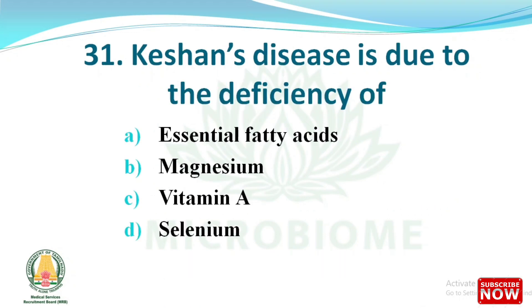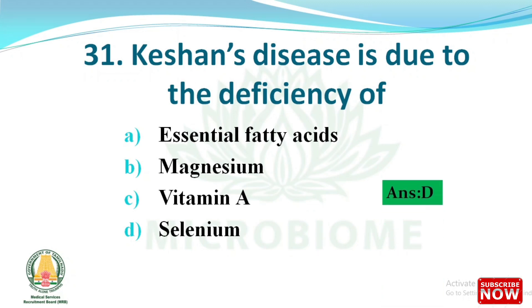Next question: Keshan disease is due to the deficiency of which of the following? The options are essential fatty acid, magnesium, vitamin A, and selenium. The right answer is option D, selenium. Keshan disease is a congestive cardiomyopathy probably caused by dietary deficiency of selenium, named after Keshan, where symptoms were first noted.